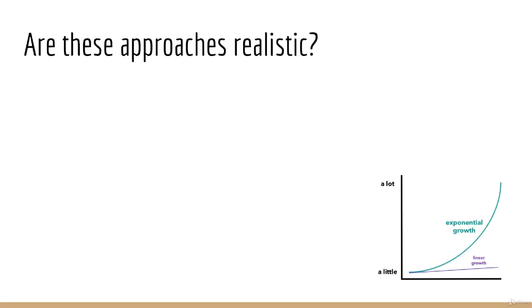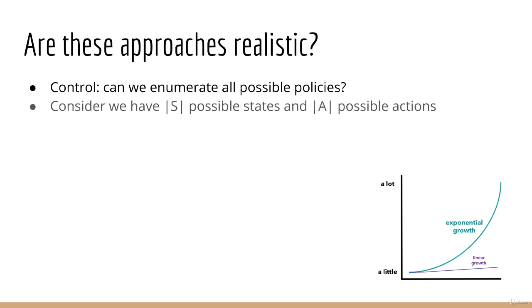Now, let's consider the control problem. Is it really possible to enumerate all possible policies? Consider if we have big S possible states and big A possible actions. In this case, the total number of possible policies is big A to the power big S. In other words, this grows exponentially. And hence, it is not feasible to enumerate all possible policies for most practical problems.